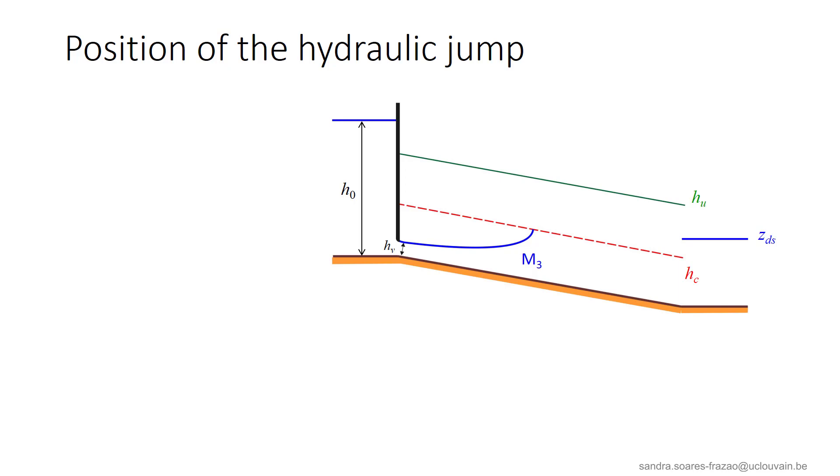Consider this mild slope channel with an underflow gate here as its upstream end, and a downstream level as indicated here, that could for example be the level in a reservoir.